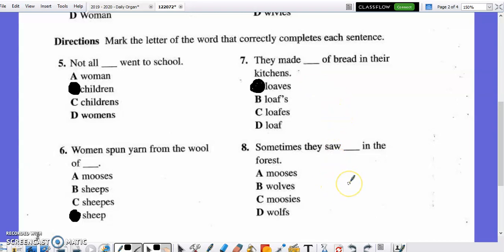And finally, number eight. Sometimes they saw blank in the forest. Mooses, A. Wolves, B. Mooses, C. Or wolves with an S, D. Mark the correct response now. One wolf turns into multiple wolves. W, O, L, V, E, S. That's the correct irregular plural.